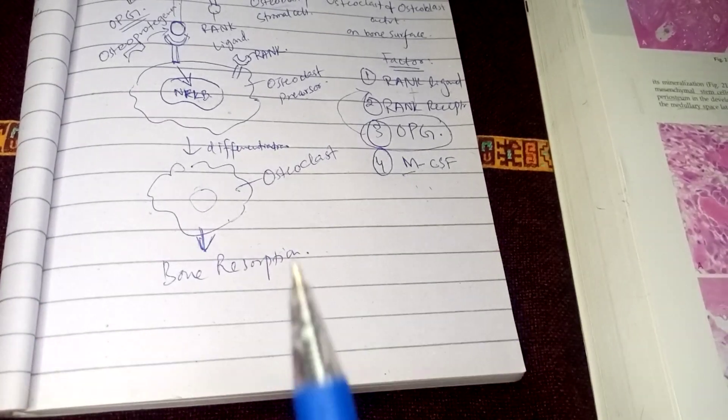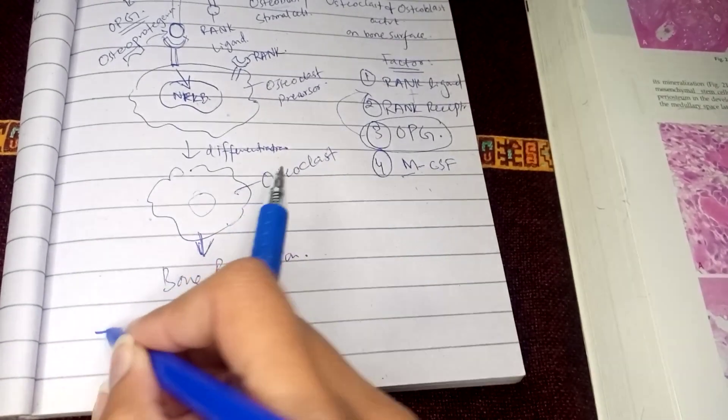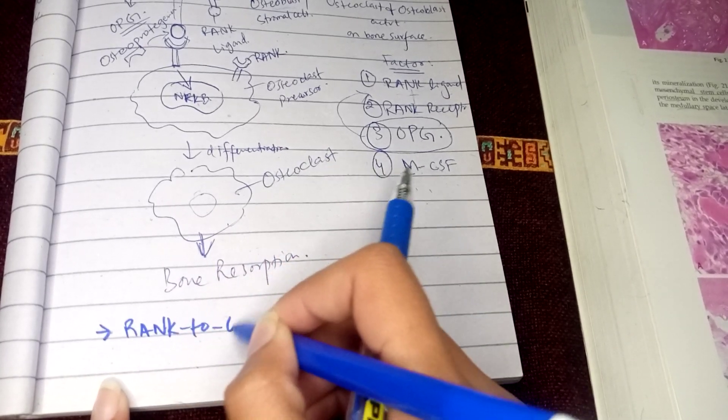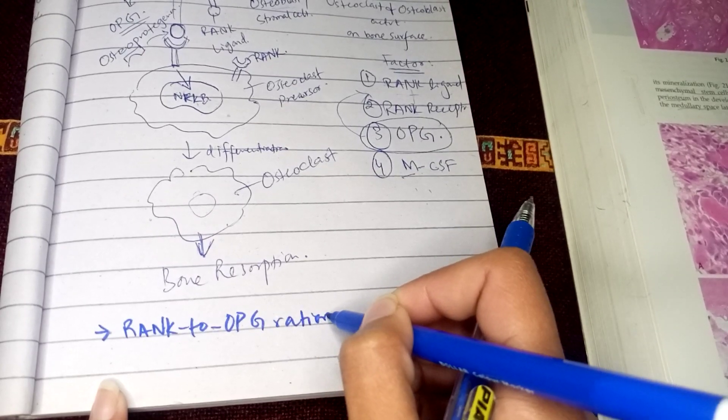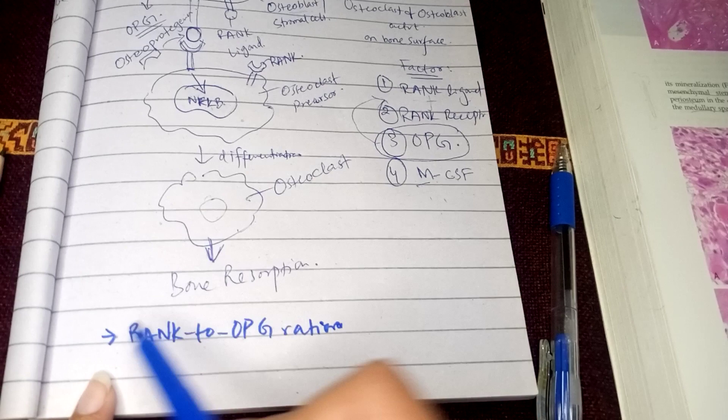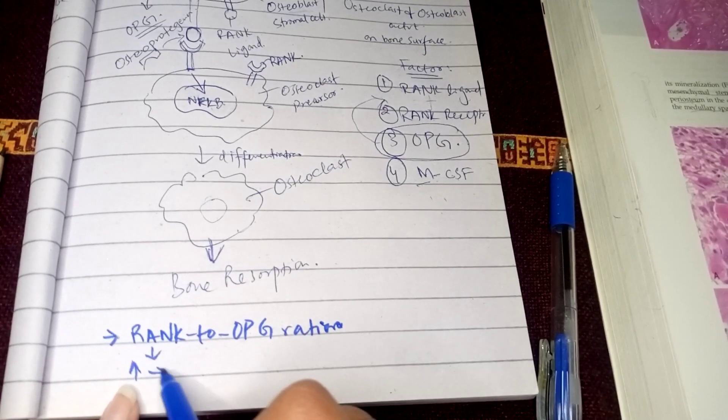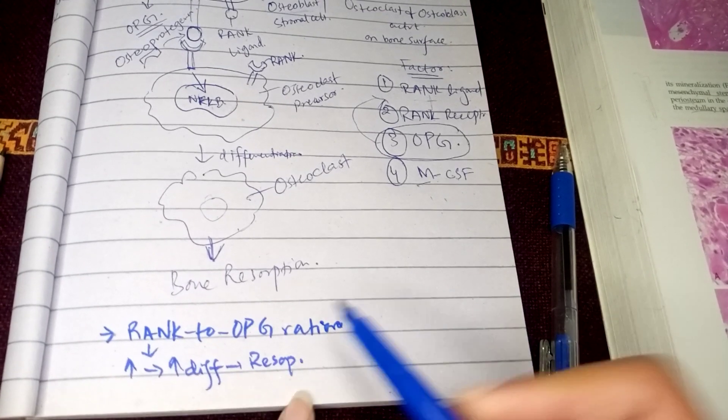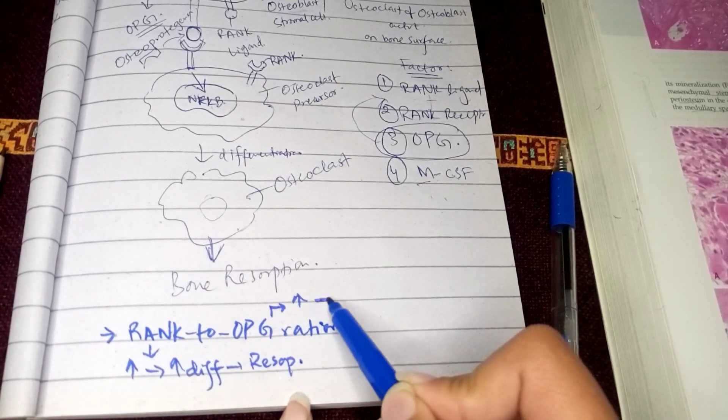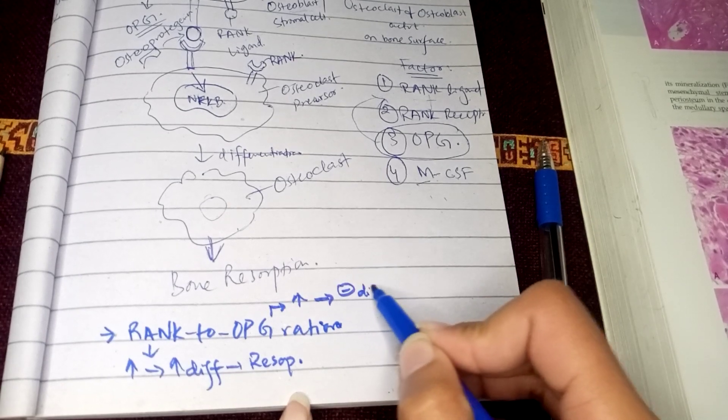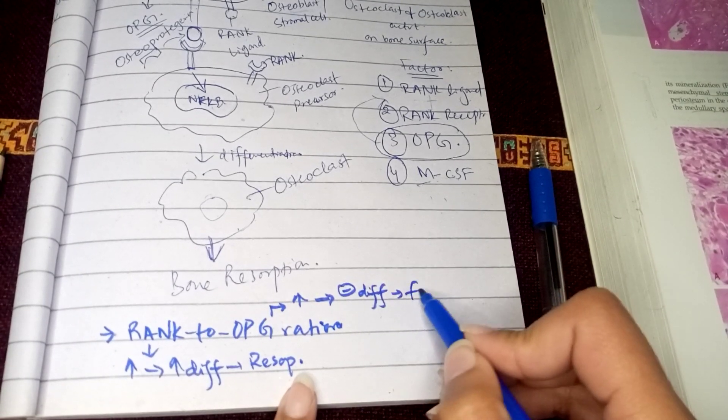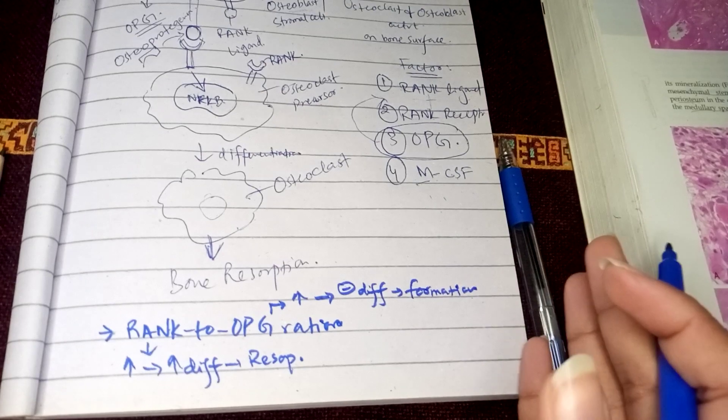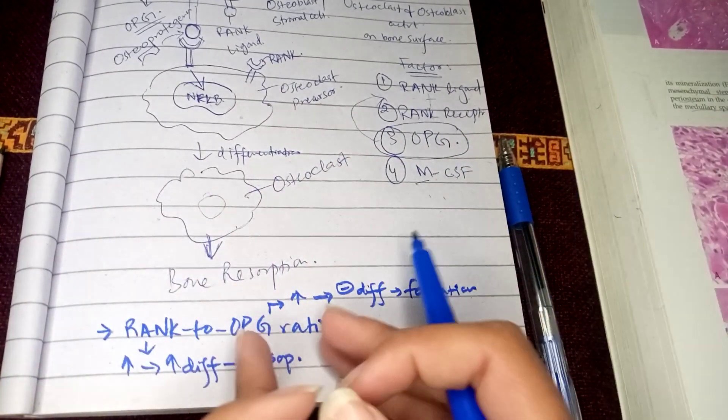How are bone resorption and bone formation favored? It is determined by the rank to OPG ratio. The more rank factor, the more differentiation and bone resorption. But the more OPG, it's gonna block differentiation and favor bone formation. Now what factors increase rank or OPG?